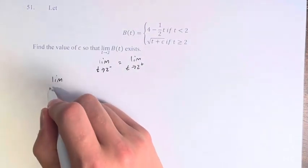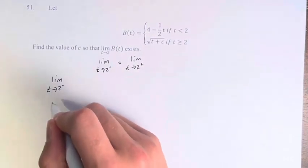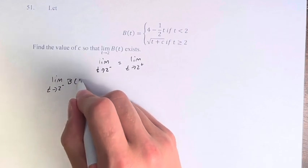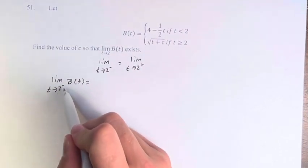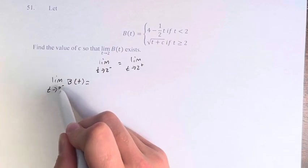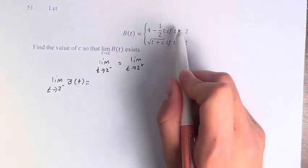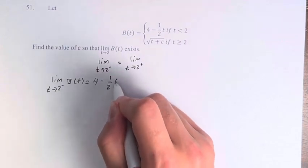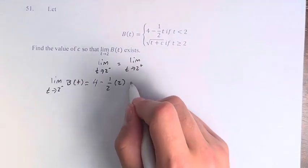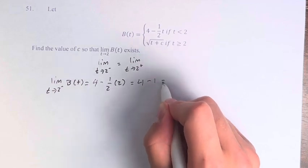So the limit as t approaches 2 from the left is easy to find, because we're just plugging in 2 for values that are getting closer to 2 but are less than 2. So these are values less than 2, so we use 4 minus 1/2 t. So 4 minus 1/2 times 2, we just plug it in. So this is 4 minus 1, which is 3.